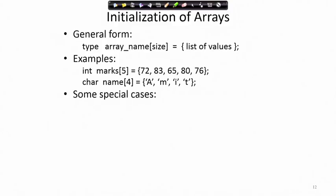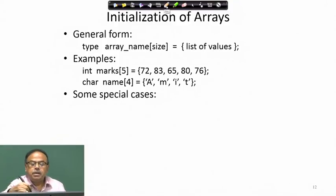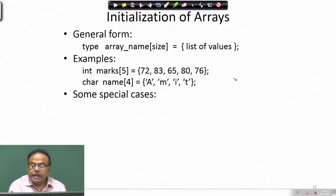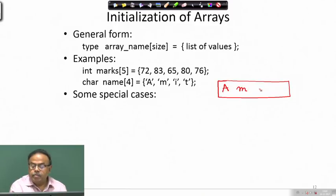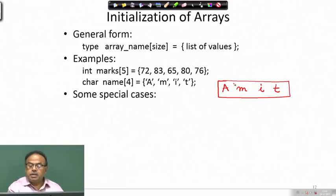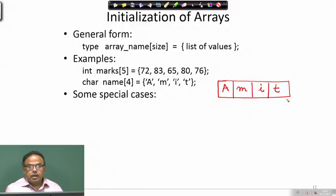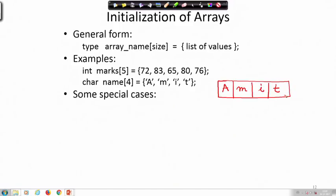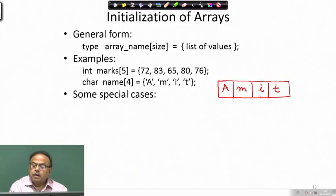Similarly, we can have a character array: char name[4] = {'a', 'm', 'i', 't'}. The array has 4 elements storing the characters a, m, i, t - the name 'amit' as a string of 4 characters. Although the word 'string' is used, be careful because strings have additional properties to be described later. For now it is simply an array of characters of size 4.